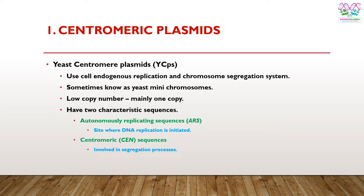The yeast centromeric plasmids use the cell's endogenous replication and chromosome segregation system. They are sometimes known as yeast mini-chromosomes. They are very low in copy number, mainly having just a single copy. These centromeric shuttle vectors have two characteristic sequences: one is the autonomously replicating sequences (ARS), which are the sites where DNA replication is initiated, and the other is centromeric sequences.